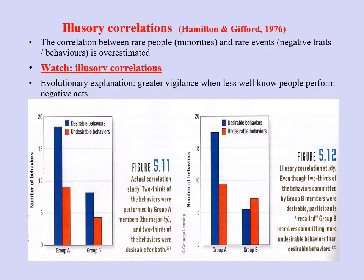There is a possible evolutionary explanation for the illusory correlation effect: a type one error (false positive) is less costly than a type two error (false negative). An unusual person is more likely to be noticed, and an unusual person doing something negative is significantly more likely to be noticed. This goes some way toward explaining why negative attitudes are often associated with minority stereotypes, even when there is no objective foundation for this judgmental bias.